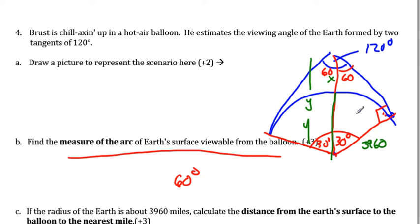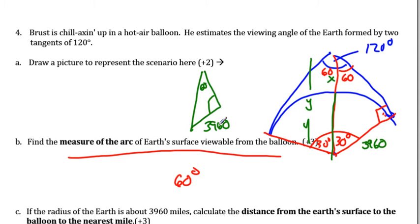We have a 60° angle, so we can use trig functions or recognize a 30-60-90 triangle. Drawing the triangle: 60° angle, 90° angle, and the side across from 60° is 3960. Divide by √3 and multiply by 2 to find the hypotenuse. Once you have the full hypotenuse, subtract 3960 to get the distance from the earth's surface to the balloon. That's all Pythagorean theorem for the application problems.